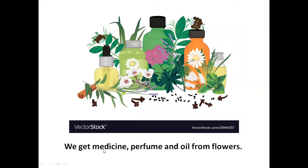We get medicine, perfume, and oil from flowers. Children, we use different things at home and it's written on the box that this perfume, medicine, or oil smells like a certain flower. So we get various medicines, perfumes, and oil from flowers. Repeat after me: We get medicine, perfume, and oil from flowers.